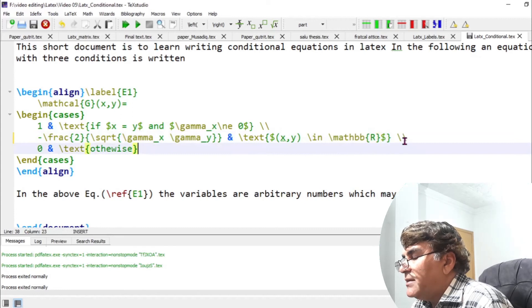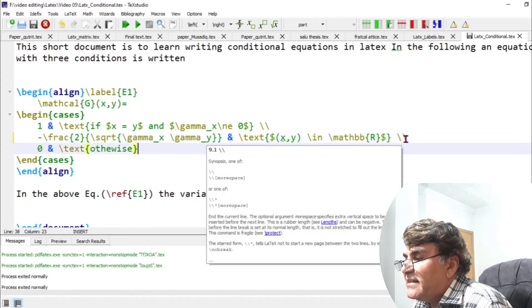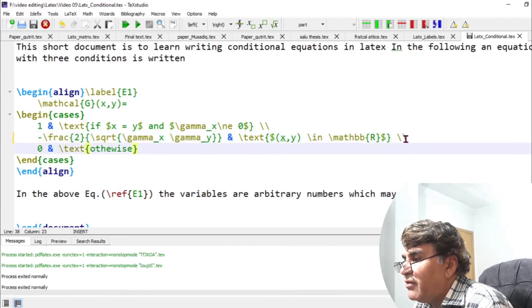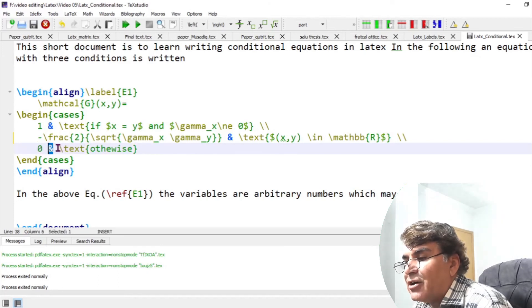And then I add the two backslashes in order to start a new line. Here I start a new line again, this gives the value of the function, the ampersand separates the value and the condition which I write here is otherwise.